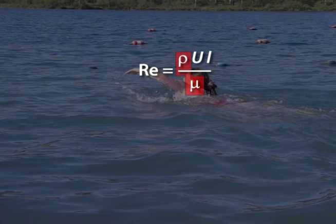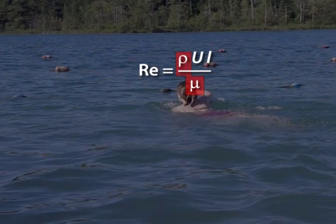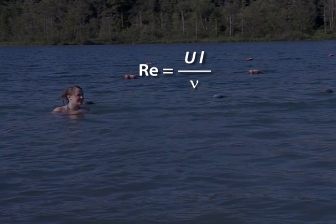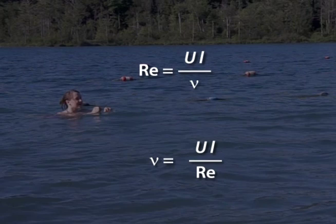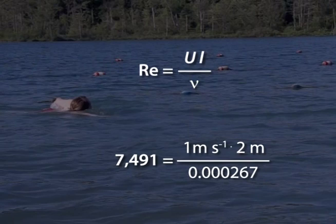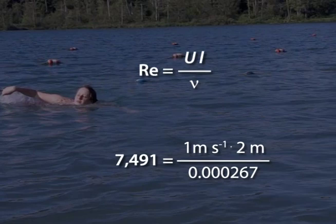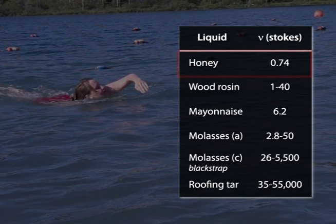Water has a kinematic viscosity of 0.01 stokes, where one stoke is 10 to the minus fourth meters squared per second. The Reynolds number becomes length times speed divided by kinematic viscosity. For us to swim at the same Reynolds number as the protist, the kinematic viscosity would have to be about 7,500 stokes — 750,000 times more viscous than water. Honey comes in at a paltry 0.7 stokes, only 70 times more viscous than water.